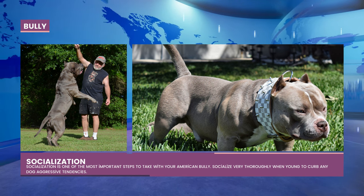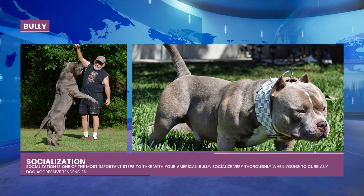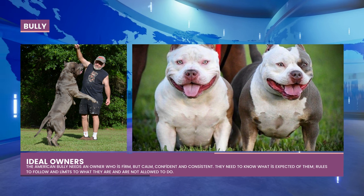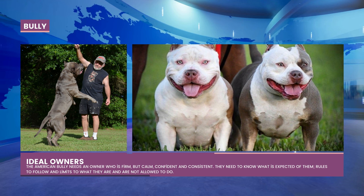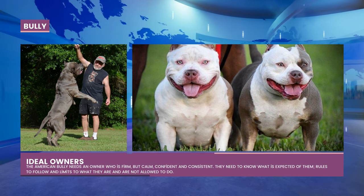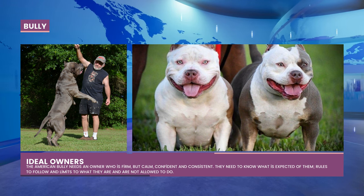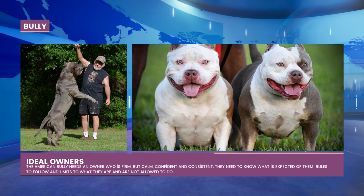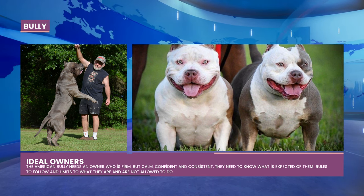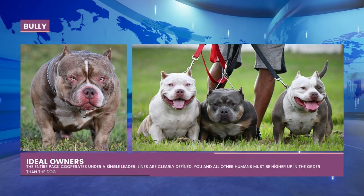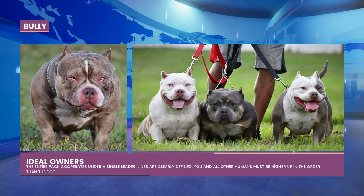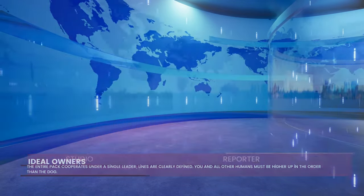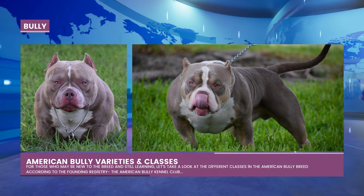This breed is not appropriate for passive owners. The American Bully requires an owner who is firm but also composed, assured, and reliable — one who understands the guidelines to follow and the restrictions in place. The goal of successfully training this dog is for the owner to become the pack leader. When humans and dogs coexist, the entire pack works together under a single leader. The dog must come after you and all other humans in the pecking order.